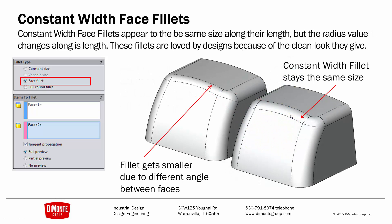Another nice option of the Face Fillet tool that designers like is the Constant Width Fillet. With Constant Width, the size of the fillet looks the same even though the radius is changing along its length. Here we see the fillet is larger on the front of this shape than with the Constant Size Fillet. The radius is changing but it visually looks the same along its length — something that can be advantageous for industrial designers.